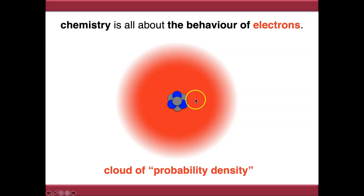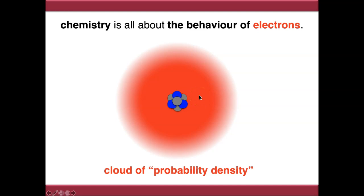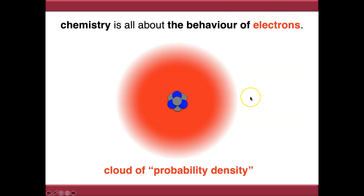The deeper the colour, the more likely you are at a specific point in time to find an electron in that area. It gets lighter the further away you get from the atom, meaning you have less chance of finding an electron far from the nucleus. These clouds of probability density are what we call orbitals.